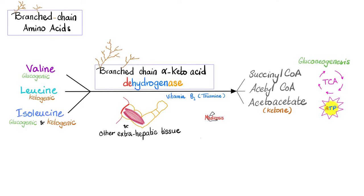Let's talk about the normal first. Normally, we have branched-chain amino acids — valine, leucine, and isoleucine — which are branched-chain in their chemical molecular structure. The branched-chain amino acid alpha-ketoacid dehydrogenase converts them to succinyl-CoA and acetyl-CoA. These can enter into the TCA cycle to give energy, or go on to become glucose through gluconeogenesis.